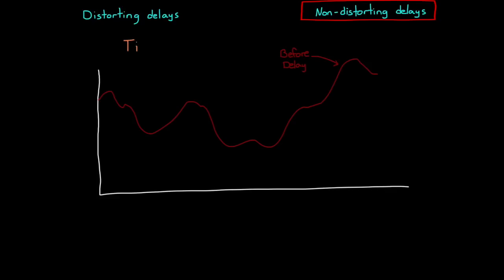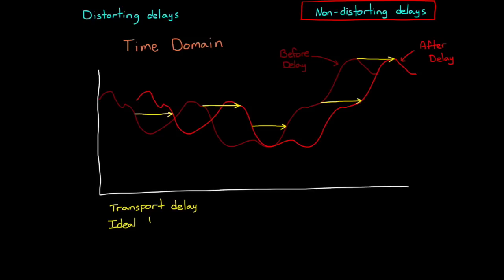Non-distorting time delays affect the entire signal equally, every frequency the same. Therefore, the whole signal maintains the same shape and amplitude, but it's just postponed by some amount of time. And depending on the industry you're in and the specifics of the system you're talking about, you might refer to this as transport delay, or ideal delay, or unit delay, or latency. But regardless of the name, the impact is the same. An action occurs, and it takes some amount of time for the effects to take place. There is a time interval between the stimulation and the response.